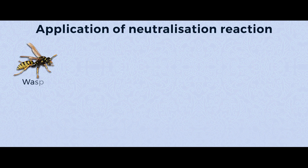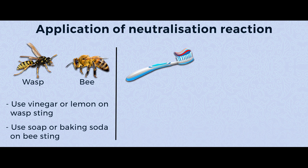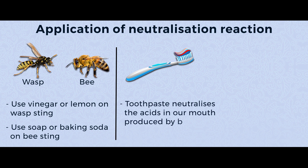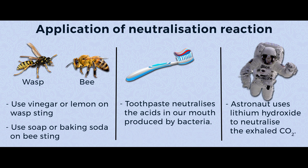If you are stung by a wasp, apply lemon or vinegar because wasp sting contains alkali. But if you are stung by a bee, apply soap or baking soda because bee sting contains formic acid. We brush twice a day because toothpaste reduces the acid in our mouth produced by bacteria feeding on food remains. Astronauts carry lithium hydroxide into space because it can neutralize the effect of carbon dioxide.